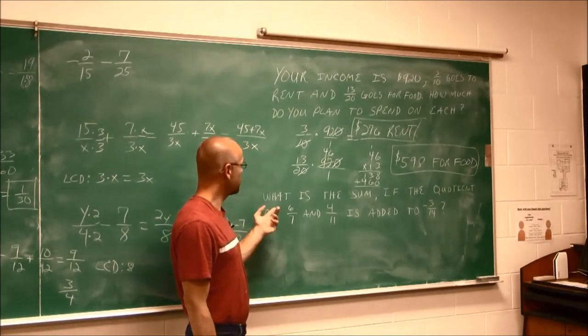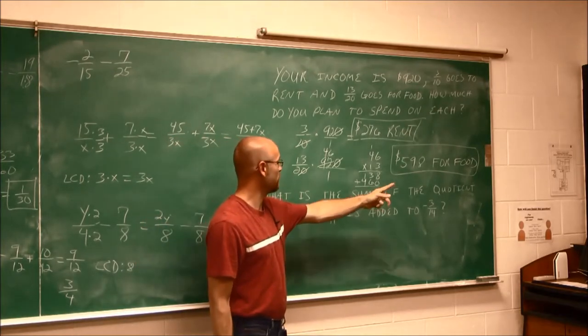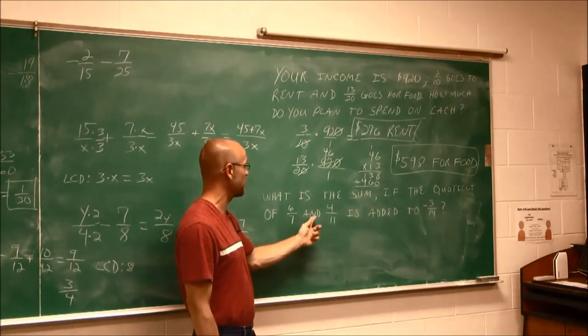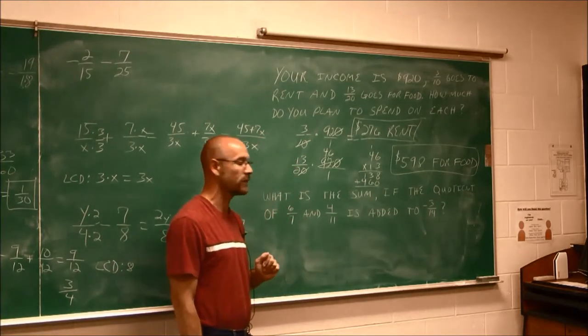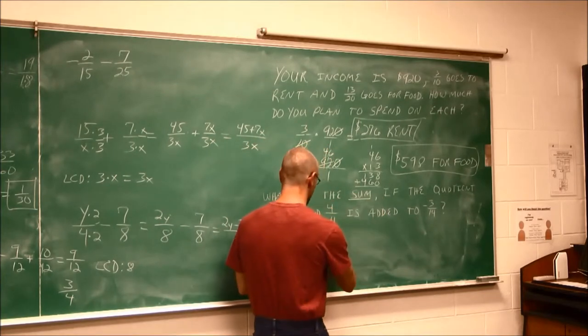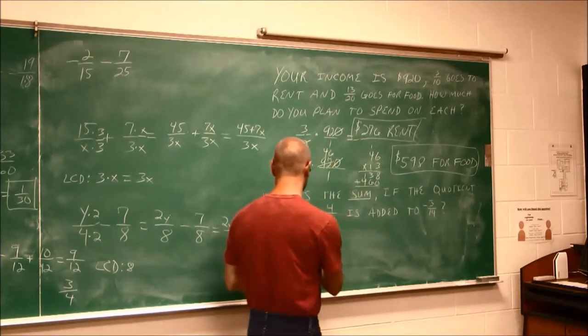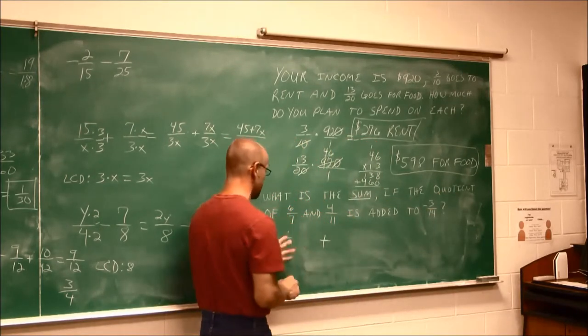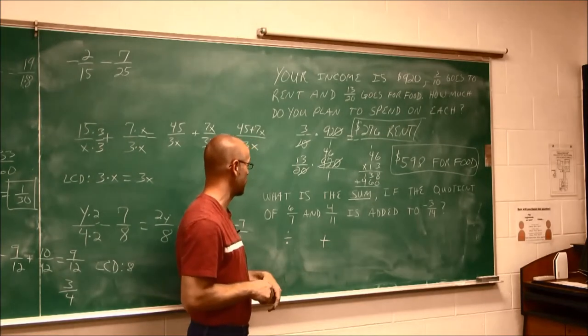Alright, so let's look at the next one here. It says, what is the sum if the quotient of 6 7ths and 4 11ths is added to negative 3 14ths? Well, if we read it again, I know I'm going to find a sum. And it says, if the quotient, well, the quotient says there's going to be some division. So I have to do that division before I do addition or subtraction. That's order of operations.